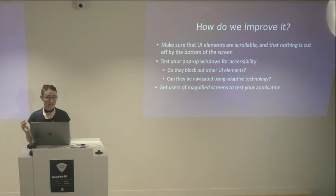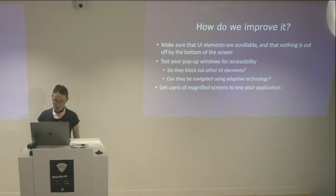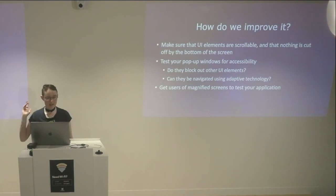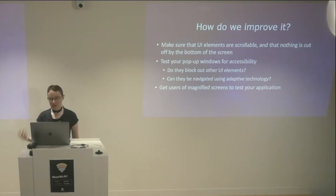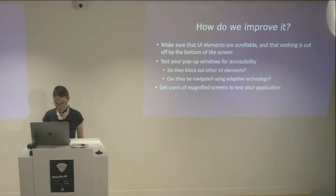So how do we improve it? Make sure that UI elements are scrollable and that nothing is cut off the bottom of the screen. Some websites do this even when they're not zoomed in, which kind of boggles my mind. Play around — zoom things in and out, have a look, make sure you're not cutting everything off. If you can have a pop-up that scrolls with a page, or a pop-up you can scroll from top to bottom, that's the best approach. Test your pop-up windows for basic accessibility: are you blocking other UI elements? Can you close them? Can they be navigated using adaptive technology? And ultimately, either magnify your screen yourself or get users of magnified screens to test your application, because this is one of the more common accessibility use cases you'll run into.